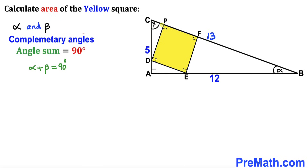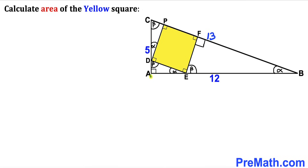We know this is a 90-degree angle, then this angle has got to be beta. Now we know that this angle is 90 degrees. So in this triangle, this angle has got to be alpha and this angle has got to be beta. In the next triangle, if this angle is 90 degrees and this angle is beta, then this angle has got to be alpha. And if this angle is 90 degrees and this angle is alpha, then this angle has got to be beta.